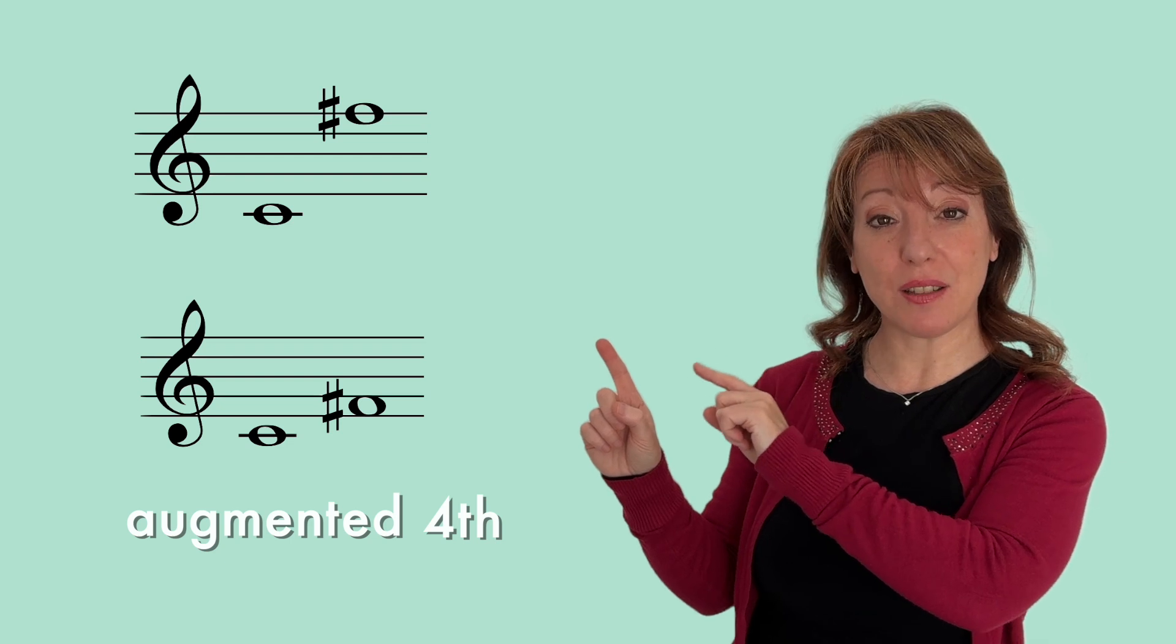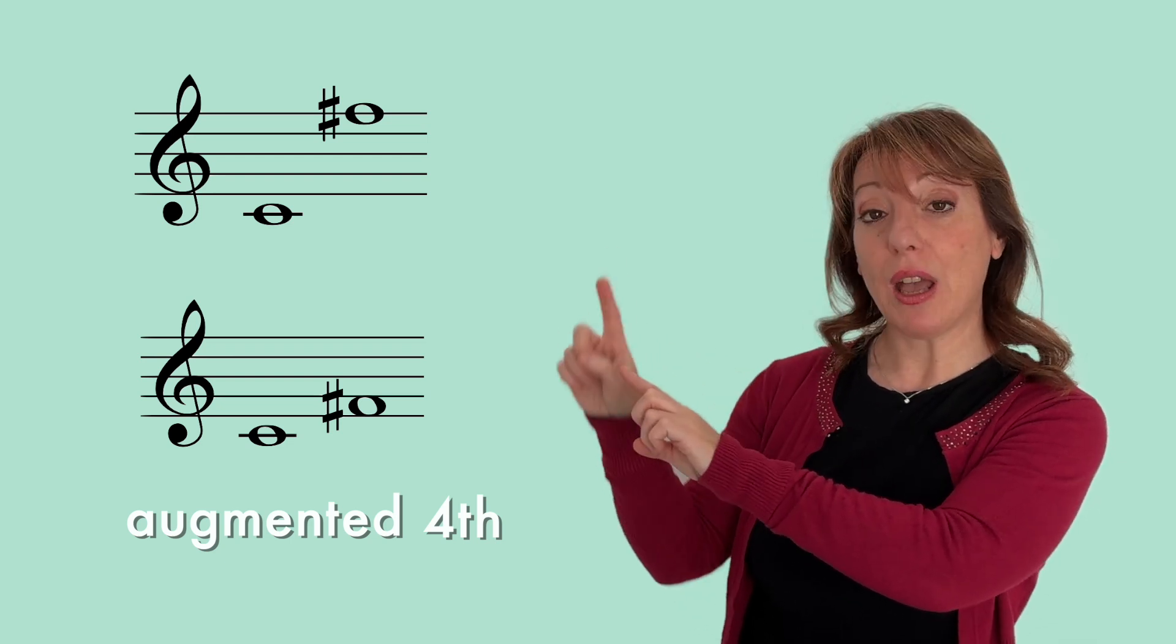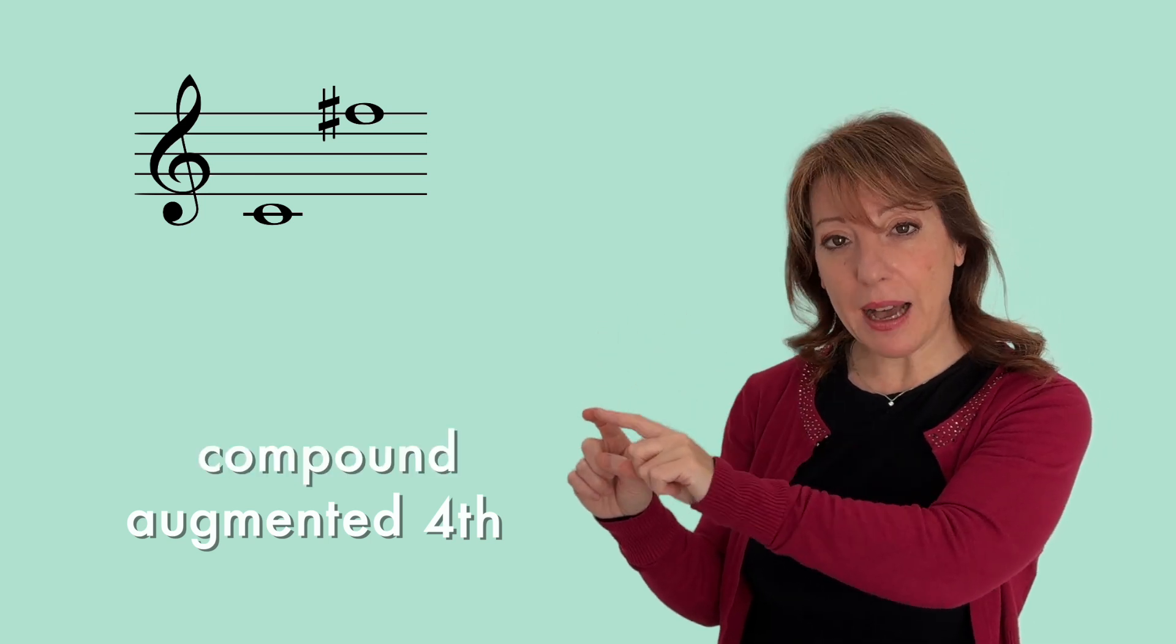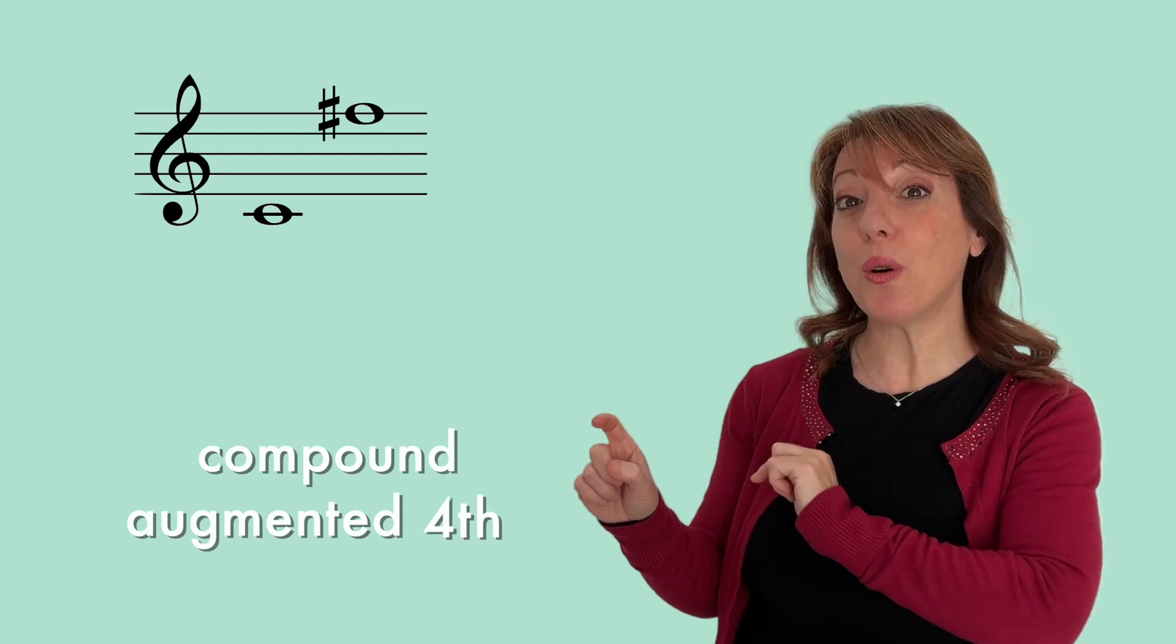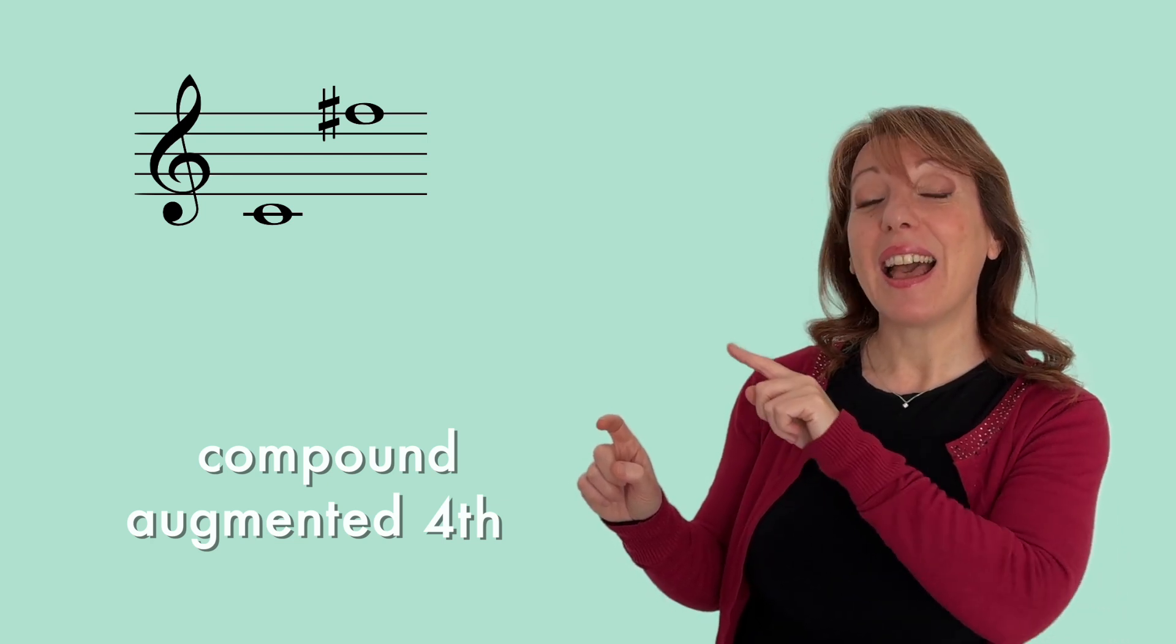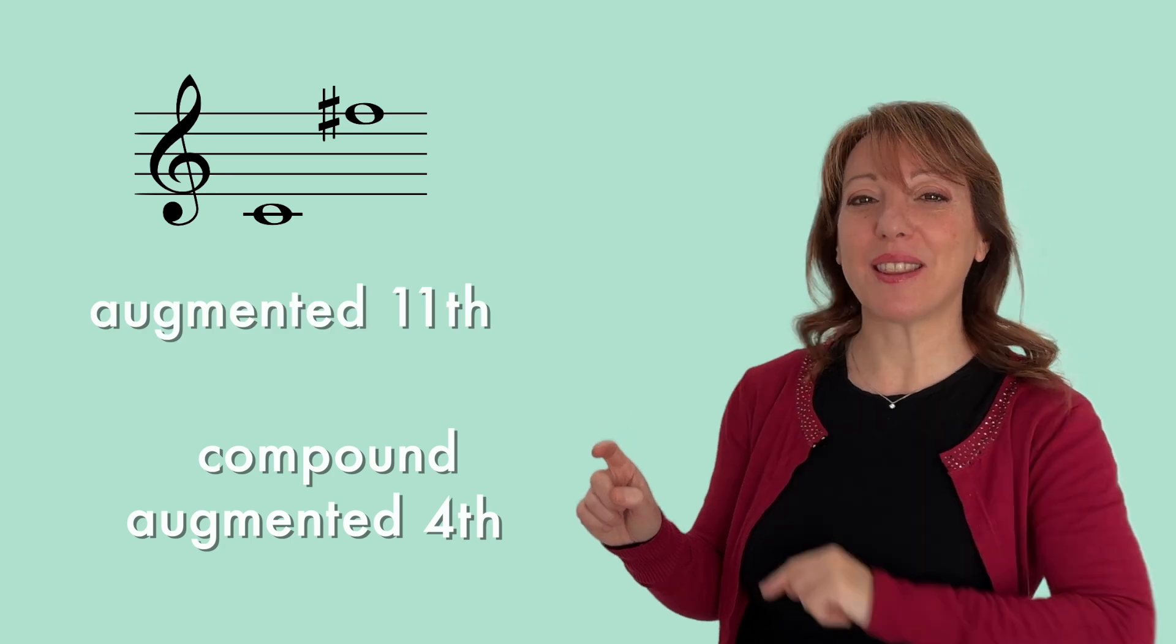Now let's remember that we have to identify a compound interval. So our F sharp is actually an octave higher. So our augmented fourth can either become a compound augmented fourth or can you guess? An augmented 11th. Did you guess it right? Let me know it in the comments below.